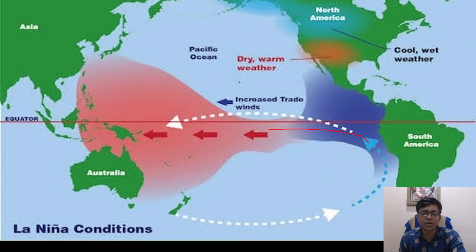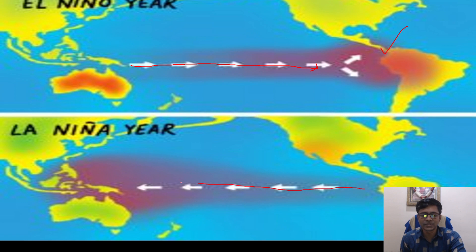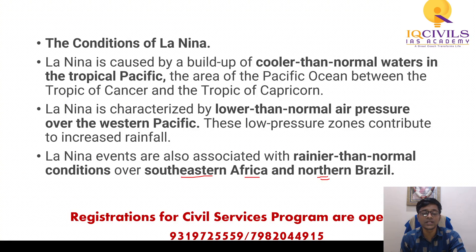In the case of La Niña, strong trade winds blow westward, bringing more rainfall to Australia, Indonesia, and India, and less rainfall to South America — the opposite of El Niño. The conditions of La Niña include: cooler than normal waters in the tropical ocean, lower than normal air pressure over the Western Pacific, and rainier than normal conditions over southeastern Africa and northern Brazil.